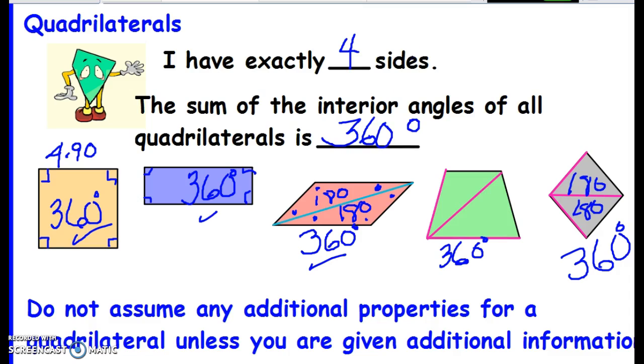So now let's note, I have exactly two properties for a quadrilateral. A four-sided figure. It has four sides and its interior angles add up to 360. Okay, do not assume any additional properties for a quadrilateral unless you have more information about it.